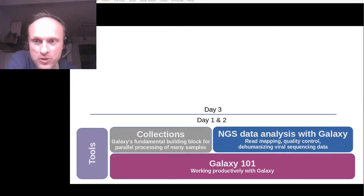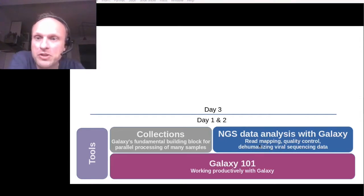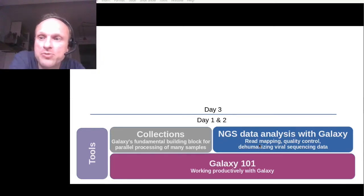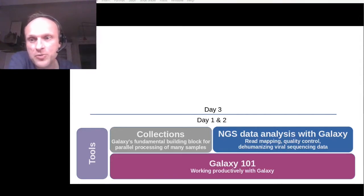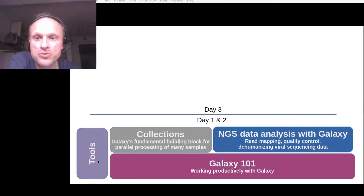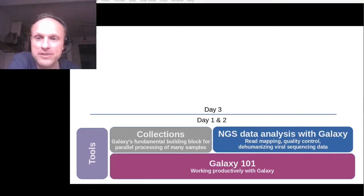You've heard about concepts of NGS data analysis and worked through several concrete tutorials about read mapping and quality control. As a first application of these concepts to viral sequencing data, you learned how to remove human reads from viral sequenced samples with Galaxy. Along the way you've encountered quite a number of different Galaxy tools and hopefully feel confident enough to combine them into more complex analyses.